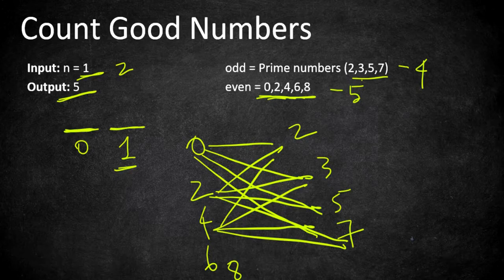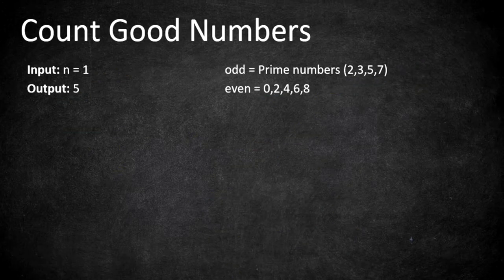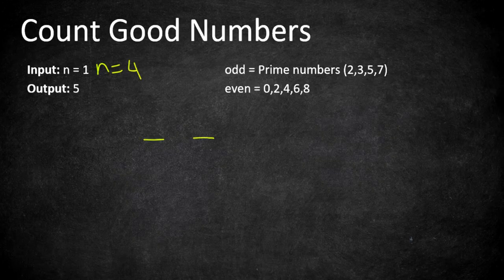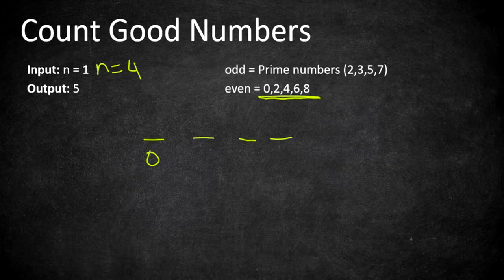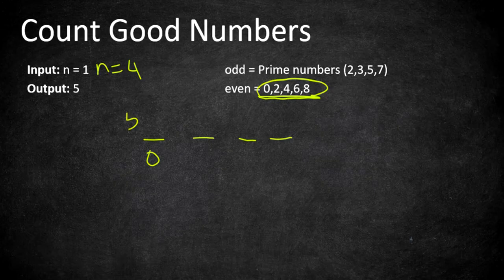You can form all other combinations by cross product. Mathematically, if you have to form a string of length n equals 4, you have 4 places to fill. At the zeroth index you have 5 possible even digits, and from those 5 you pick 1, which is the combination 5C1.